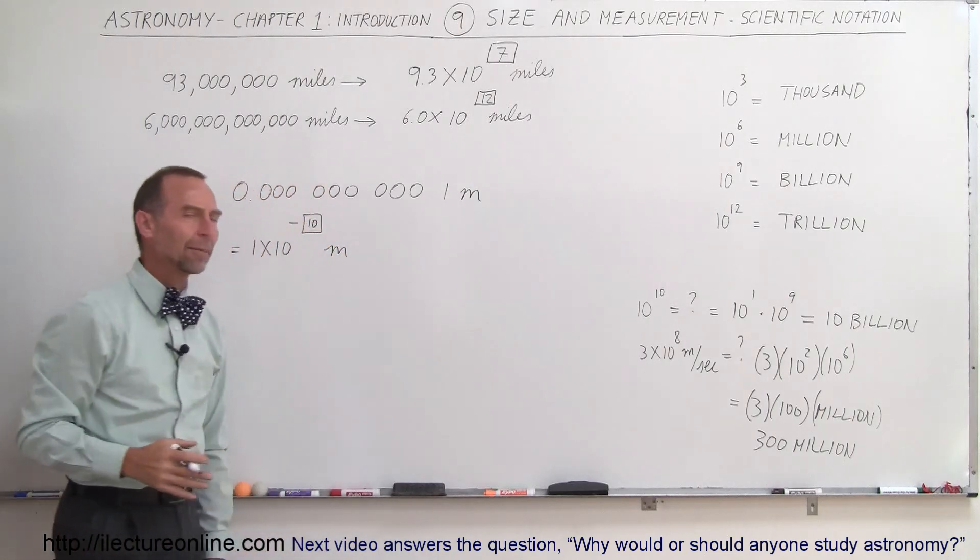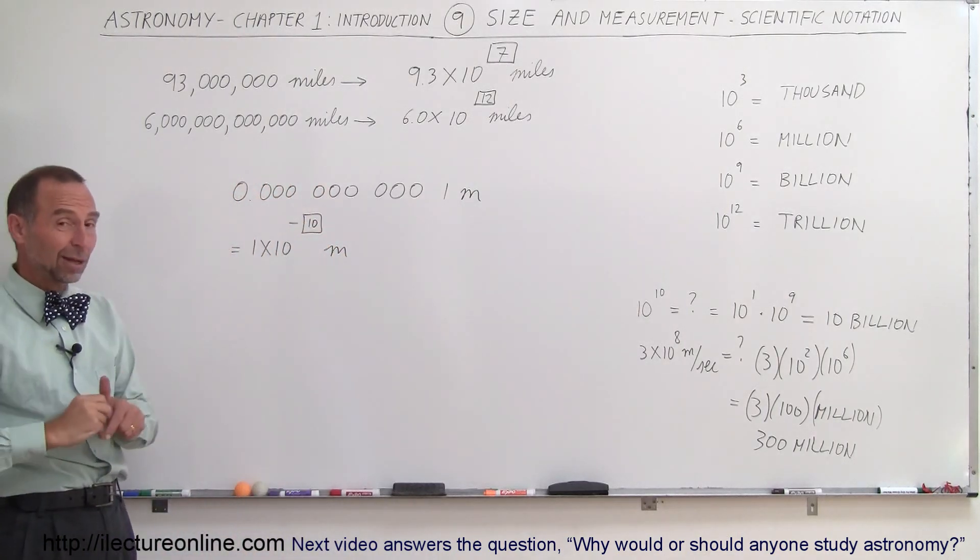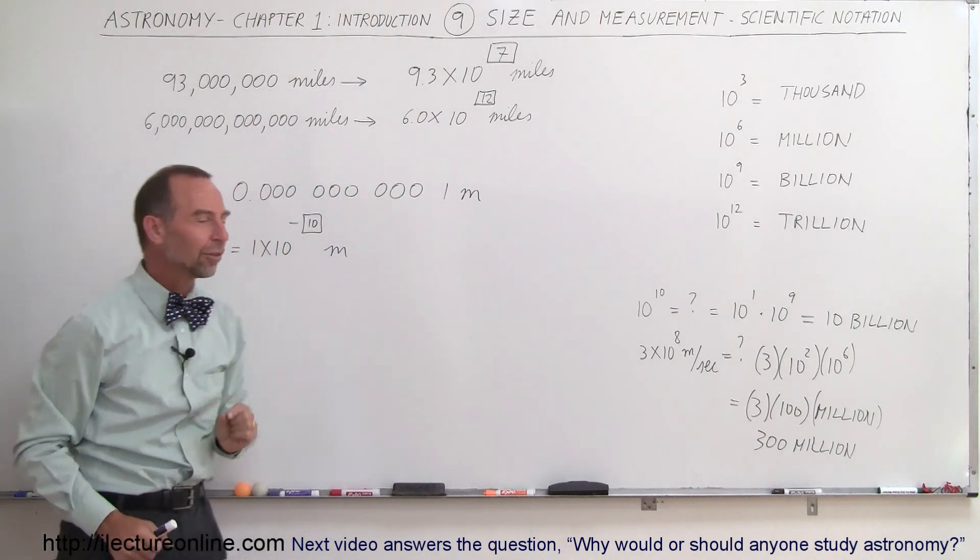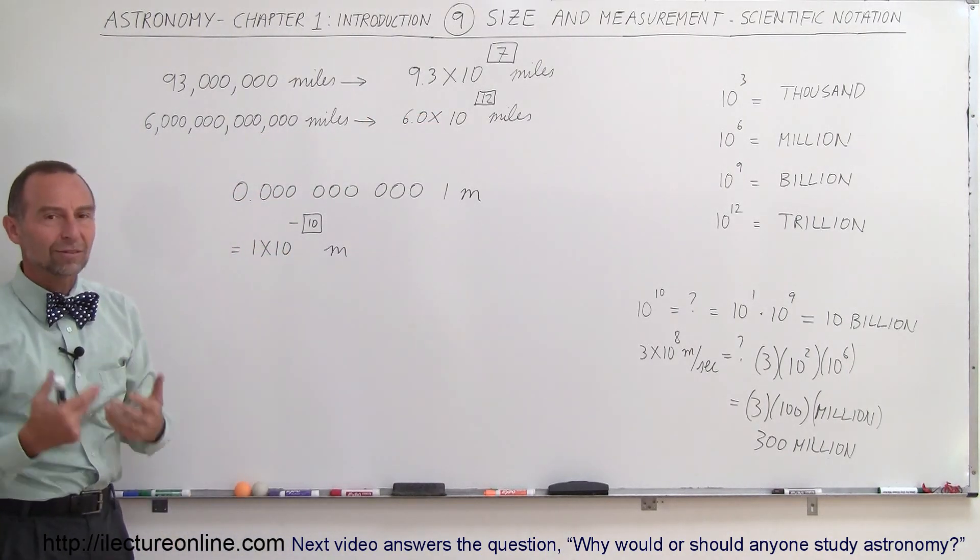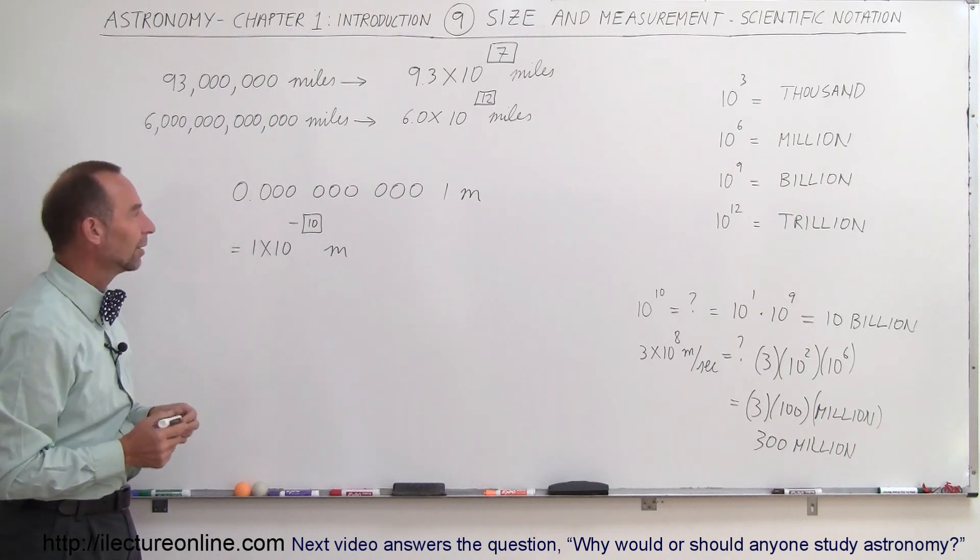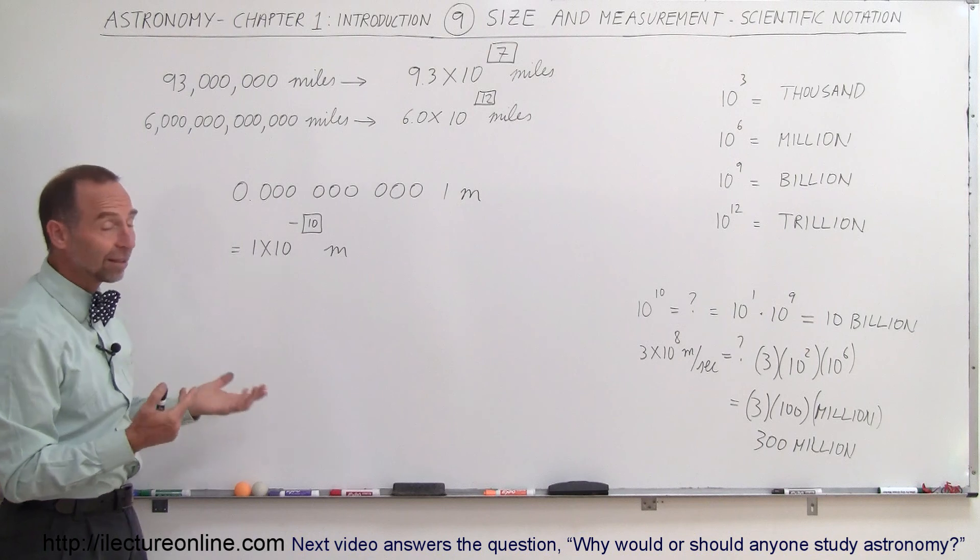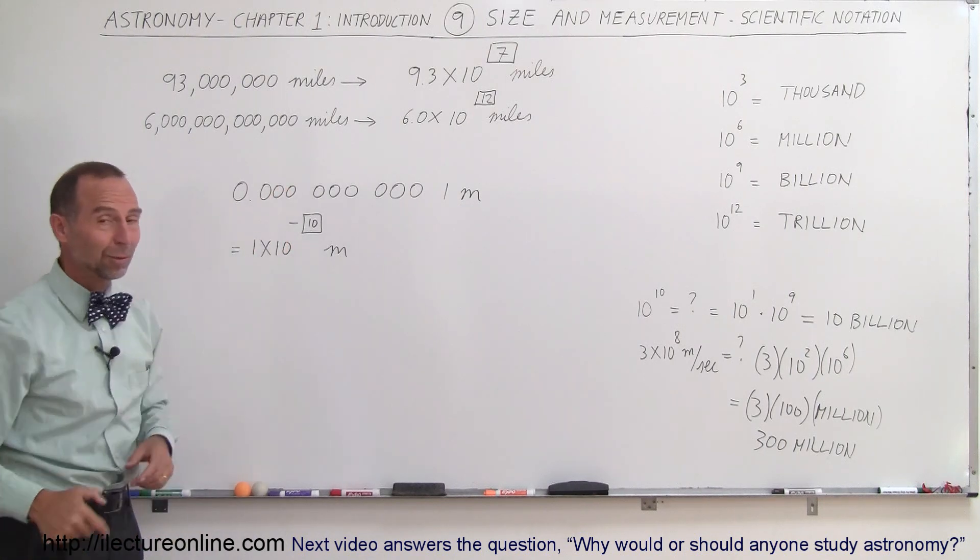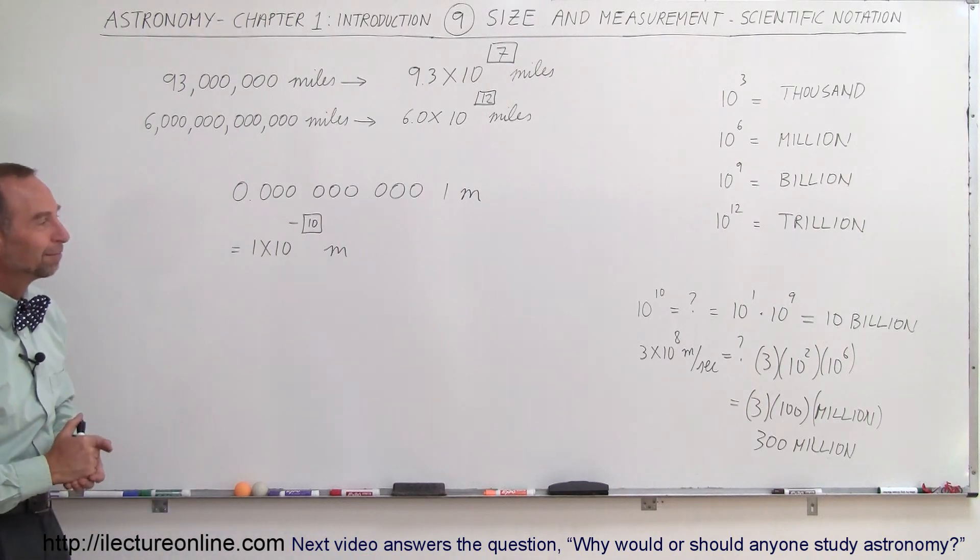So that would be a typical diameter of an atom. So in astronomy, when we talk about large things, we use positive exponents. When we talk about small things like the size of grains of sand and atoms and things like that, we talk about very small numbers like that. And scientific notation definitely helps us compact that. Otherwise, like I said, we'd be writing lots of zeros all the time. That's how we do that.